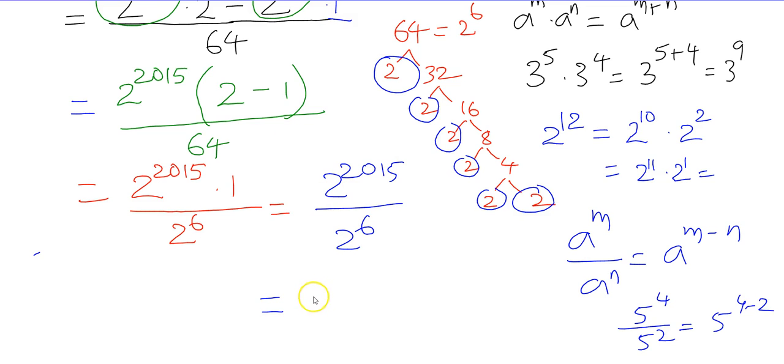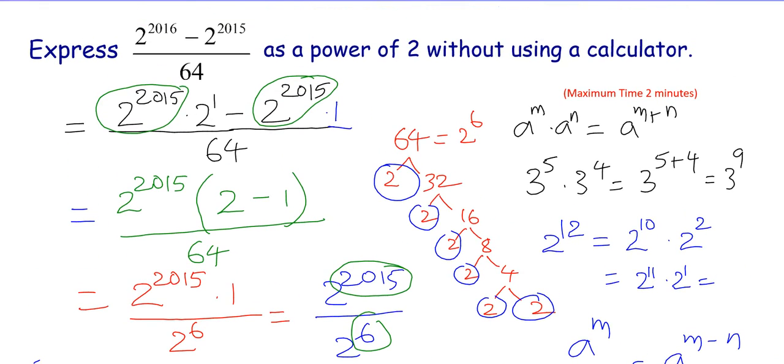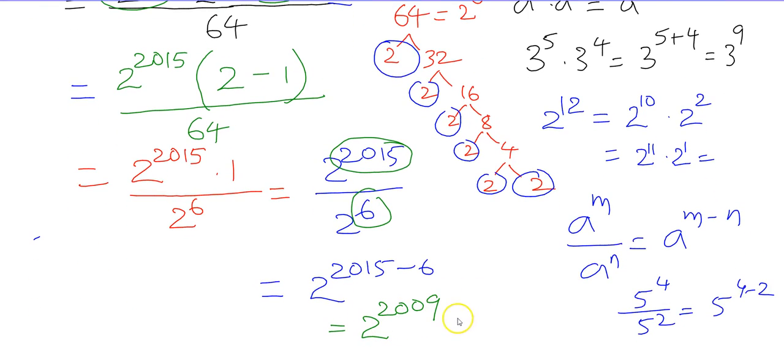Using that property, our problem changes to 2 to the power of 2015 minus 6. This one, like 2015 is your m and 6 is n. So m minus n, resulting 2 to the power of 2009. So the given problem, 2 to the power of 2016 minus 2 to the power of 2015 divided 64, on simplification it can be expressed as 2 to the power of 2009. That is the answer.